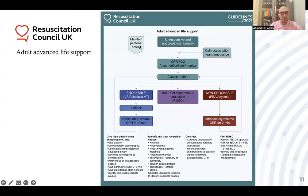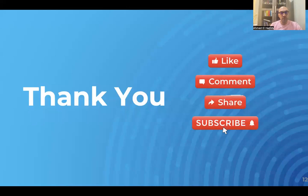This is the ALS algorithm for the Resuscitation Council UK. In brief, it is essentially the same algorithm as the ERC. Unresponsive and not breathing: start CPR 30 to 2, call the resuscitation team or ambulance, and assess the rhythm. If shockable, give one shock then immediately resume CPR. If non-shockable — PEA or asystole — immediately resume CPR and give adrenaline 1 mg IV. In shockable rhythm, give amiodarone after the third shock, and adrenaline also after the third shock, continuing adrenaline every 3 to 5 minutes in both shockable and non-shockable pathways. Thank you so much — don't forget to like, comment, share, and subscribe to our channel.